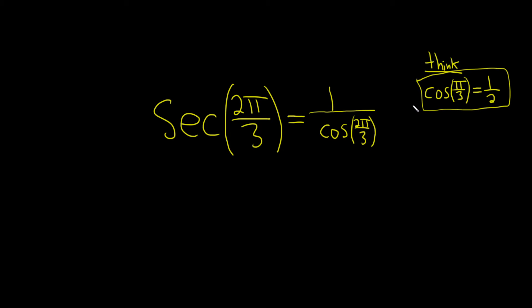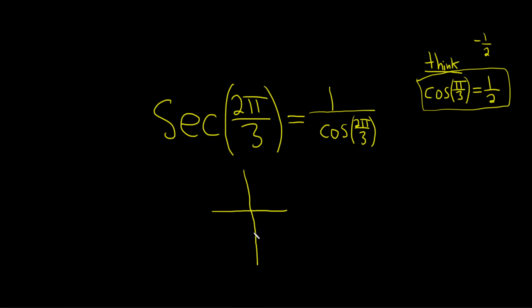So then I think: what's the answer going to be for 2π over 3? Well, it's going to be 1 half or negative 1 half — it depends where 2π over 3 is on the unit circle. The reason is, the trig function values of an angle and its reference angle are the same except for possibly a sign. So they're the same or they're opposites. We'll figure out where on the unit circle 2π over 3 is.